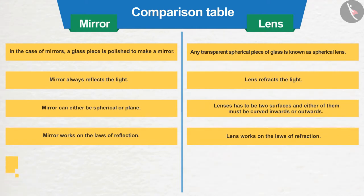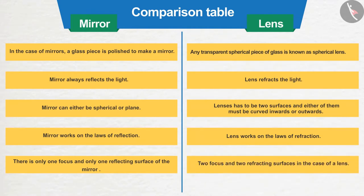Number 5: There is only one focus and only one reflecting surface of the mirror, whereas in the case of a lens, there are two.